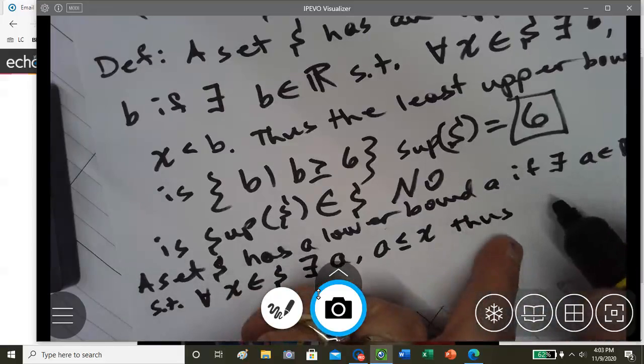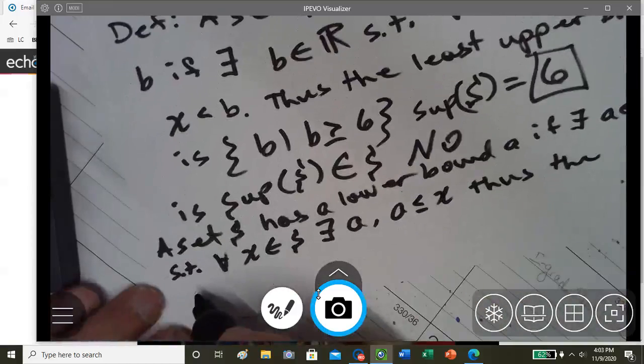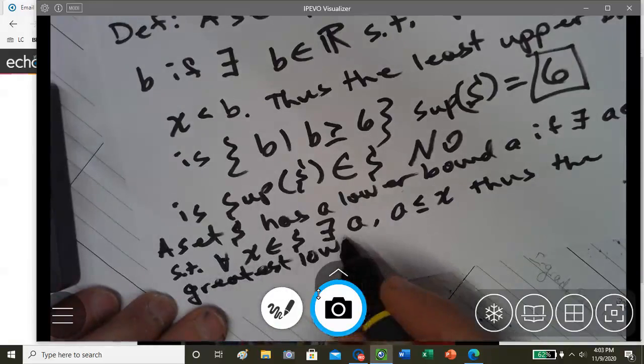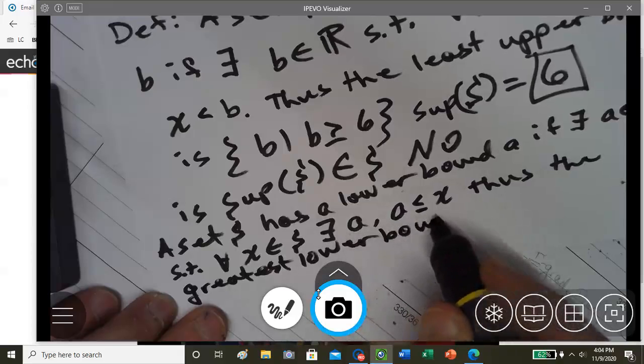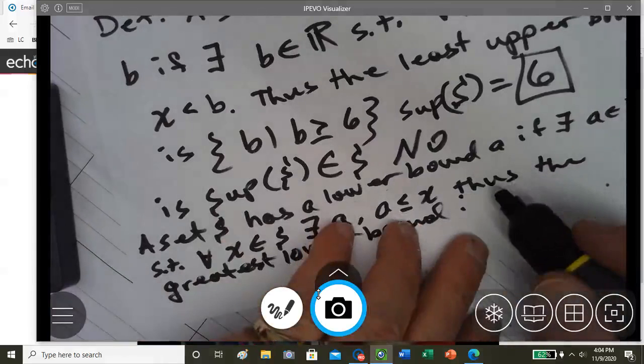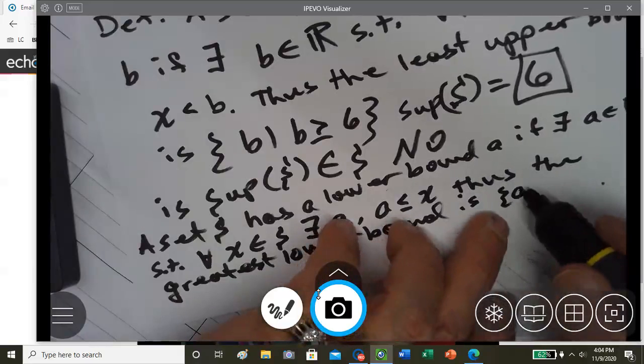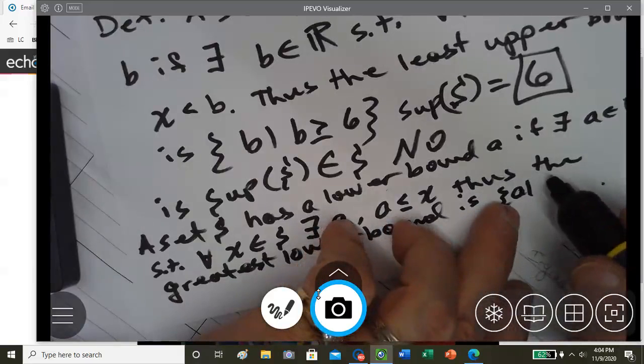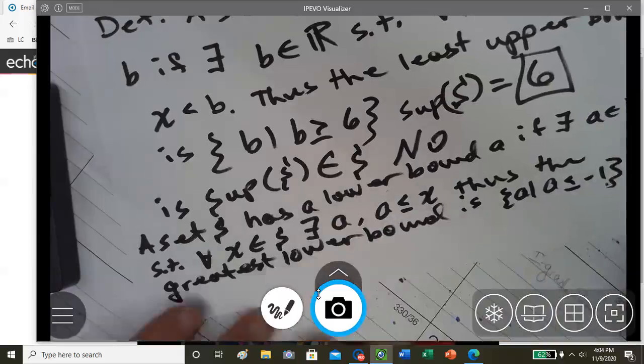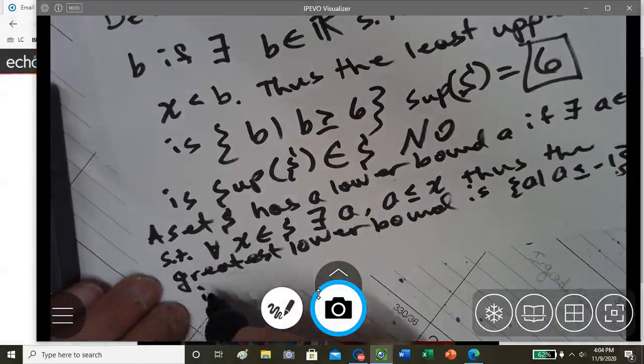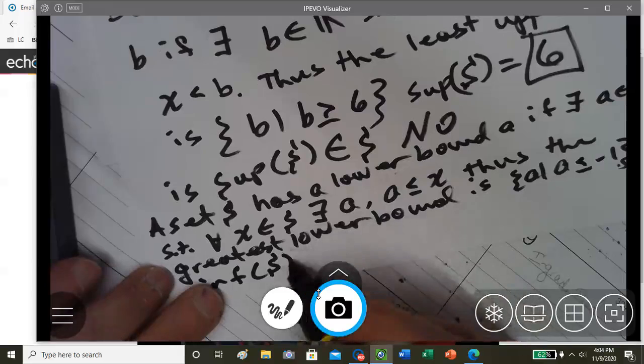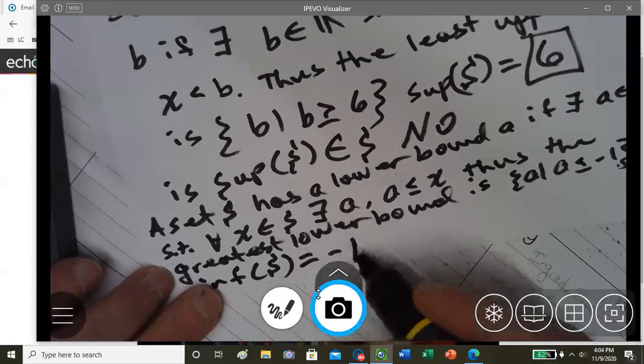The greatest lower bound or the infimum is A where A is less than or equal to negative one. And therefore the infimum for set S is equal to negative one.